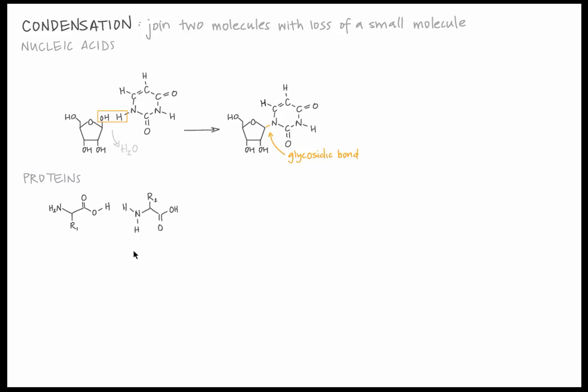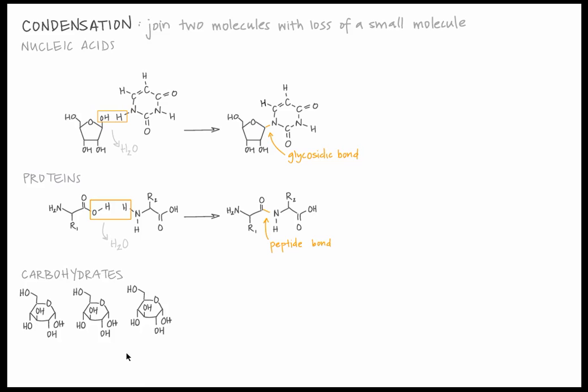Condensation reactions also join amino acids to form peptide bonds in proteins. In carbohydrates, condensation reactions join glucose molecules to create glycogen, the storage form of glucose.